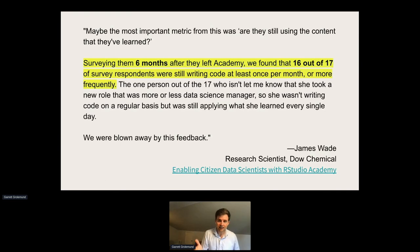I think the best way to answer that is to let one of our customers answer. This comes from James Wade, who's a scientist at Dow Chemical. They did a lot of training with RStudio Academy. I think the key thing here is he said: Surveying students six months after they left Academy, we found that 16 out of 17 of the survey respondents were still writing code at least once per month or more frequently, and that number 17 person was someone who was promoted to a manager so they didn't really have the opportunity to write code. He said they were blown away by that feedback, and I was blown away by that feedback. This is probably what you expect when you sign up for training, but the reality is this is really unusual to achieve. We're achieving it, we're achieving it regularly.